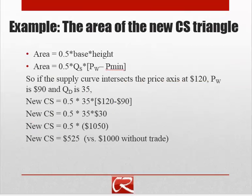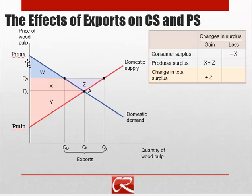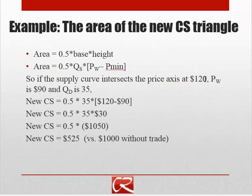Carrying through our numerical example, let's compute the area of the new consumer surplus triangle. Consumer surplus is the area above the price and below the demand curve, so it has height P-max minus PW and length QD. Using the same intercept on the vertical axis as before, with a world price of $90 and a quantity demanded of 35, we find that the new consumer surplus is $525, whereas it was $1,000 without trade.